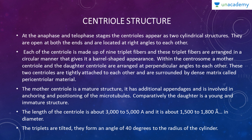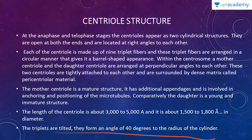Within the centrosome, a mother centriole and a daughter centriole are arranged at perpendicular angles to each other. These two centrioles are tightly attached and surrounded by a dense matrix known as the pericentriolar material. The mother centriole is a mature structure with additional appendages and is involved in anchoring and positioning of microtubules. Comparatively, the daughter centriole is young and immature. The length of the centriole is 3,000 to 5,000 angstroms and its diameter is about 1,500 to 1,800 angstroms. The triplets are tilted, forming an angle of 40 degrees to the radius of the cylinder.